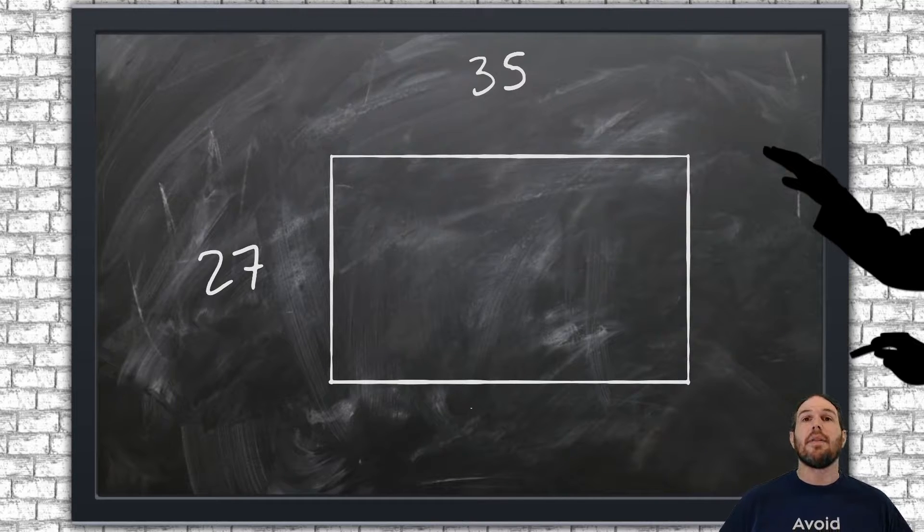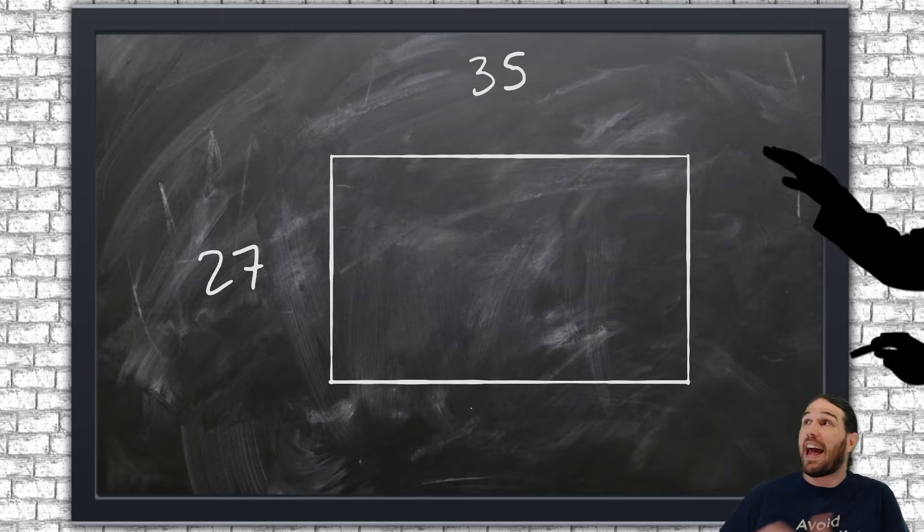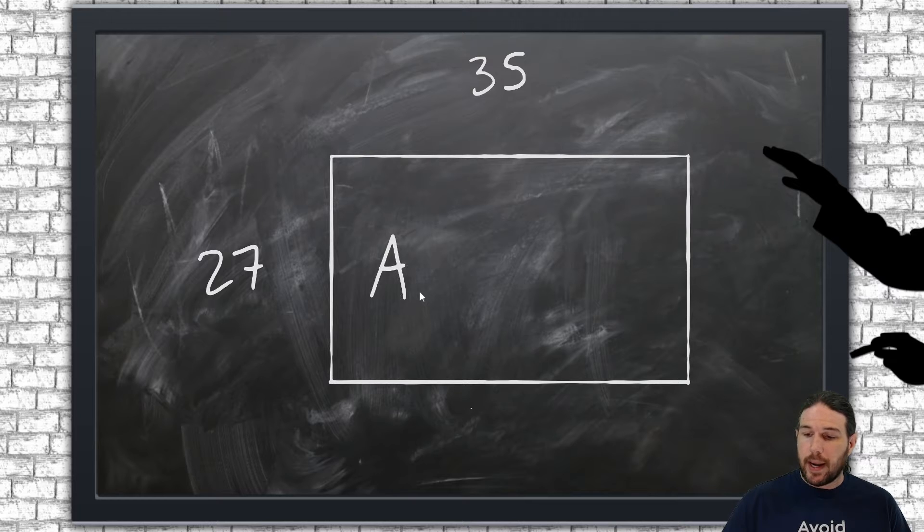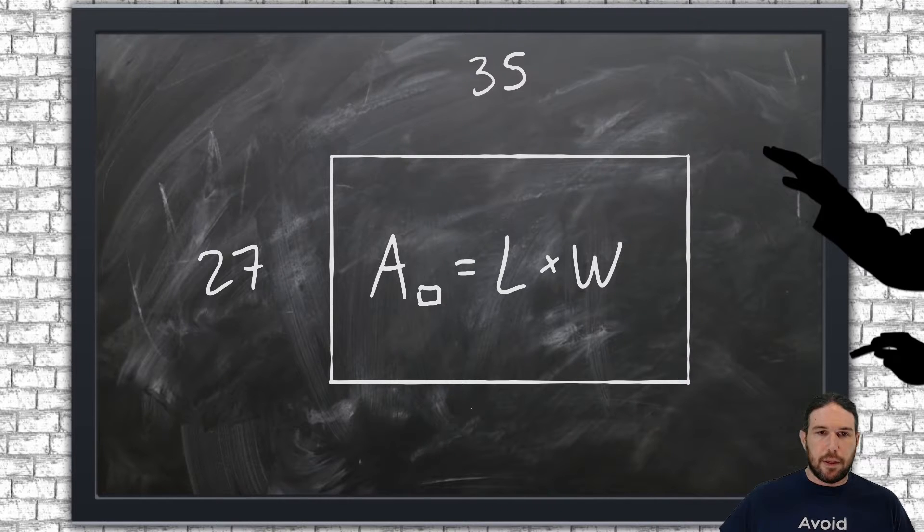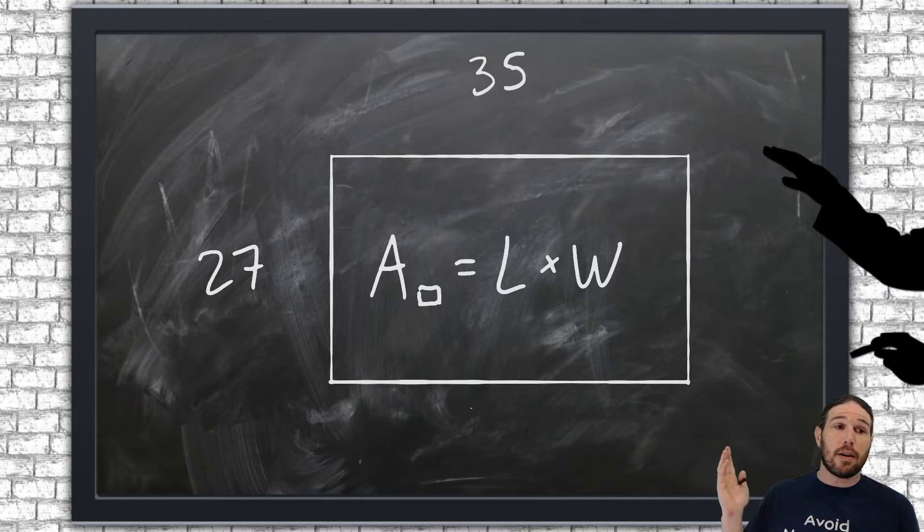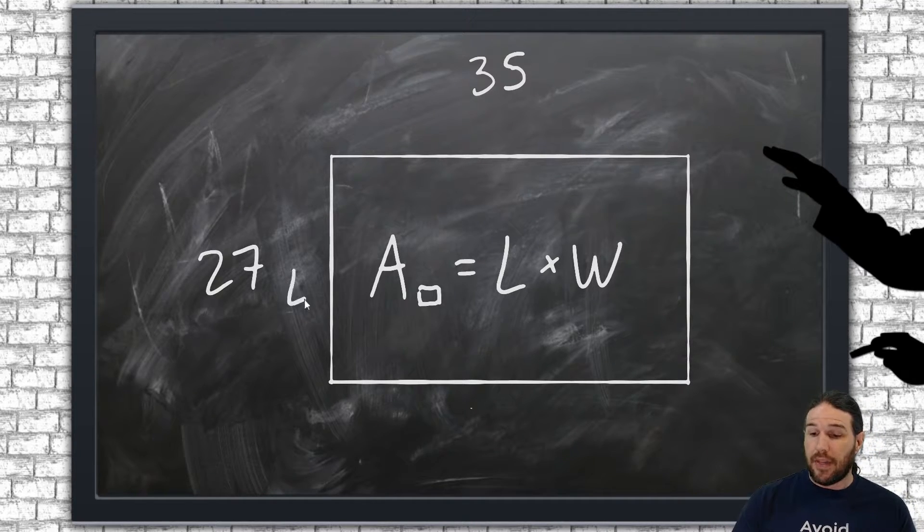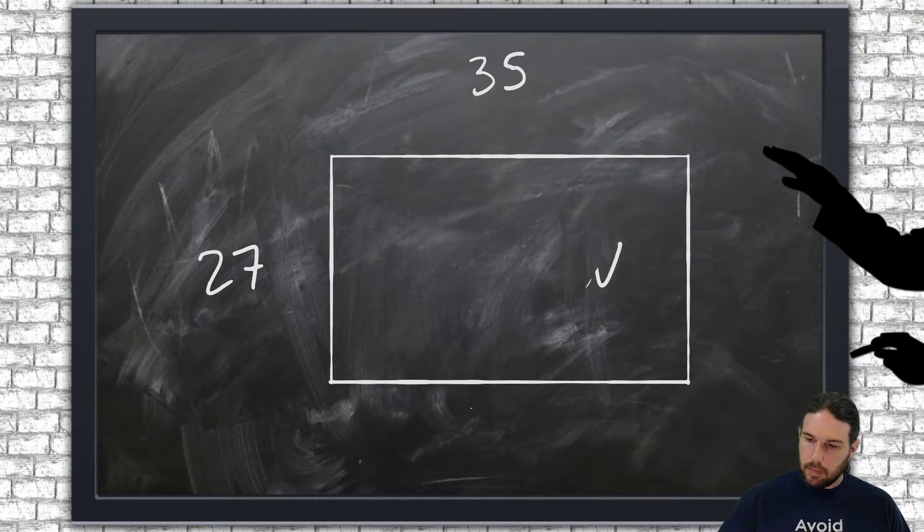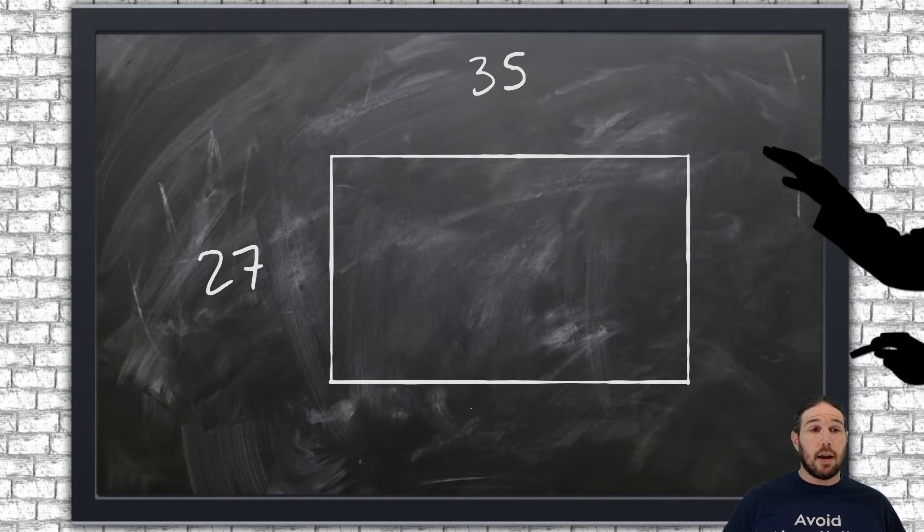We can look at the product, 27 times 35, as the area of this rectangle. As hopefully everyone remembers, the area of a rectangle is the length times the width. Now, which one of these dimensions is the length and which is the width? I don't know. It doesn't really matter. I'm going to say for the purposes of this video that that's the length and that's the width. So if I find the area of this rectangle, then I find the product of these two numbers.